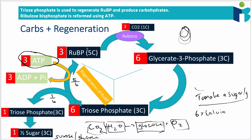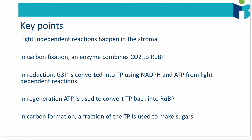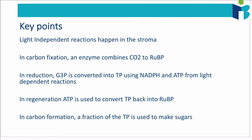To summarize: the light-independent reactions occur in the stroma of the chloroplast. Carbon fixation uses rubisco to combine CO2 with ribulose bisphosphate. In the reduction stage, glycerate 3-phosphate is converted into triose phosphate using NADPH and ATP from the light-dependent reactions. In the regeneration stage, ATP converts triose phosphate back into ribulose bisphosphate, and a fraction of the triose phosphates are used to make sugars. This concludes the discussion of photosynthesis.